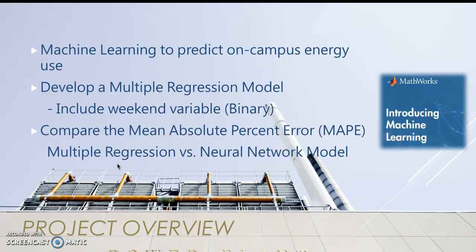The machine learning we used was to predict on-campus energy for a major university. We did this by developing a multiple linear regression model, and this included both continuous data, which was the outside air temperature.